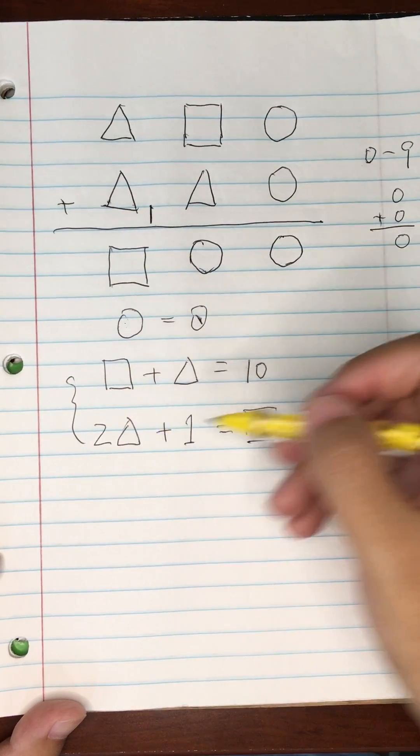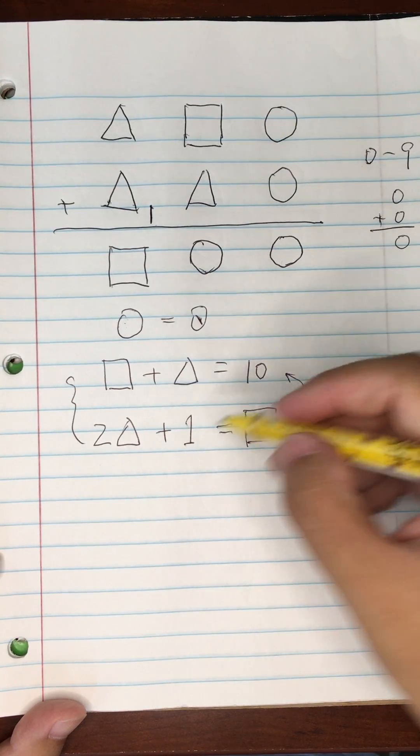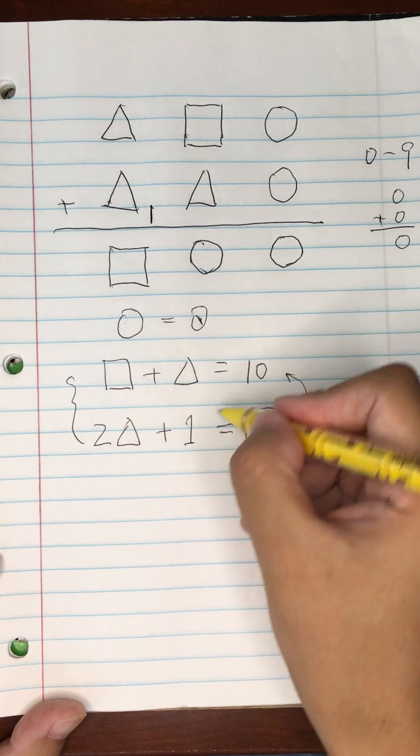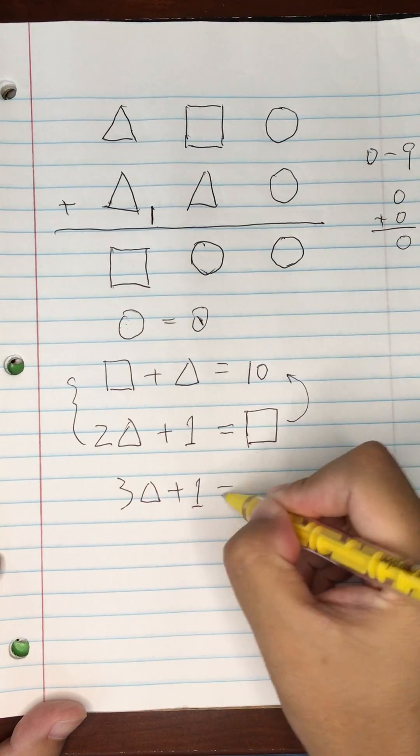If we bring this equation back in here, the square is replaced by two triangles plus one. Then we end up with, on the left hand side, three triangles plus one equals 10.